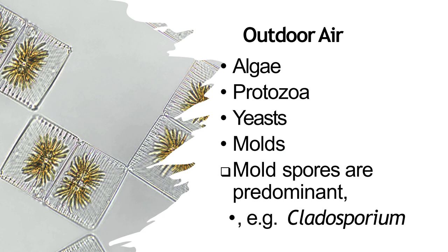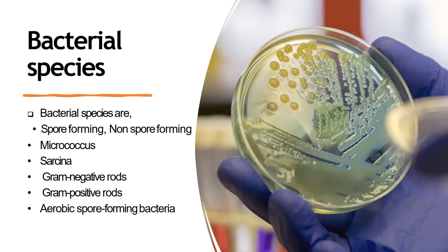Outdoor air may contain algae, protozoa, yeast, and molds, in which mold spores are predominant — for example Cladosporium. Bacterial species that can be found in air can be spore-forming and non-spore-forming, and examples include Micrococcus, Sarcina, gram-negative rods, gram-positive rods, and aerobic spore-forming bacteria.